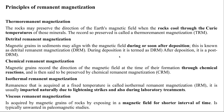Detrital remanent magnetization formed during deposition of a rock can be termed DRM, and after deposition it can be termed post-depositional remanent magnetization. Then comes chemical remanent magnetization (CRM): magnetic grains that record remanent magnetization through chemical reactions, and this can be regarded as chemical remanent magnetization.